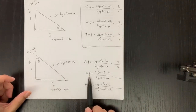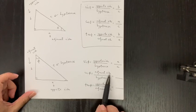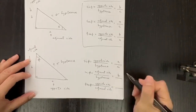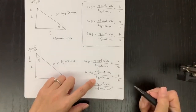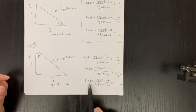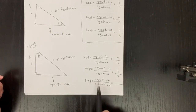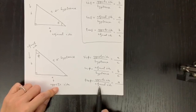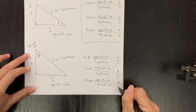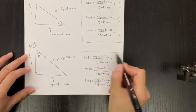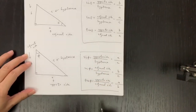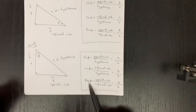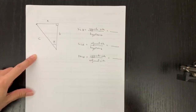Cosine phi: the formula is the same as before — adjacent side over hypotenuse. The adjacent side to this angle is B, and hypotenuse is C. For tangent phi, same formula: opposite side is A, over adjacent B. So we have this relationship for sine, cosine, and tangent formulas.